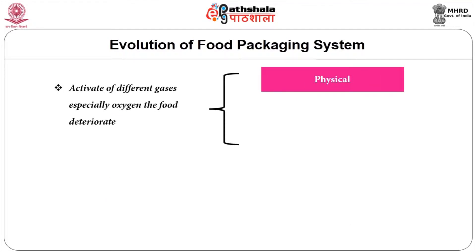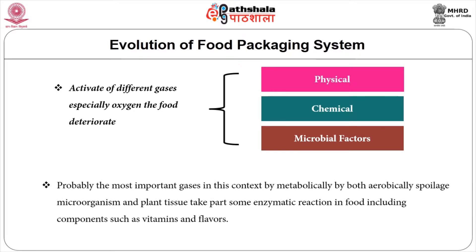Now we will see the role of different gases. Oxygen is probably the most important gas in this context, being used metabolically by both aerobic spoilage microorganisms and plant tissues, and taking part in some enzymatic reactions in food, including affecting compounds such as vitamins and flavors. In modified atmospheric packaging, oxygen is either excluded or the level is set as low as possible.